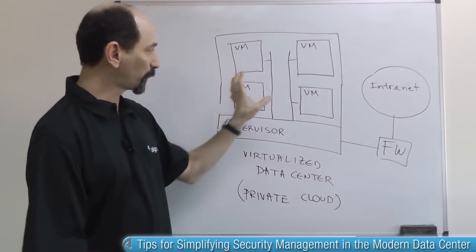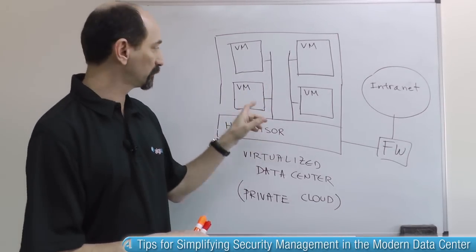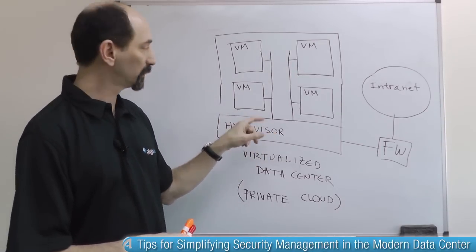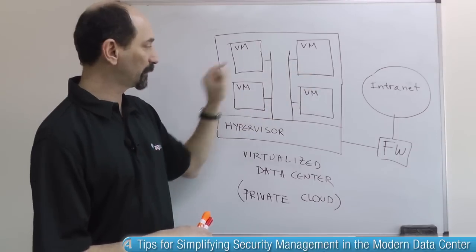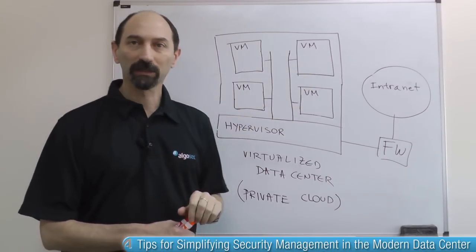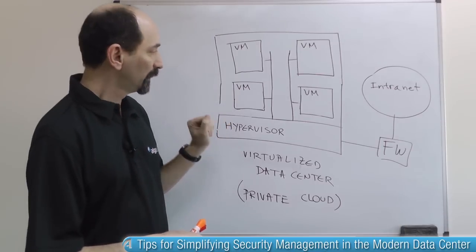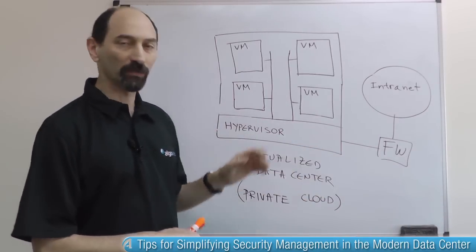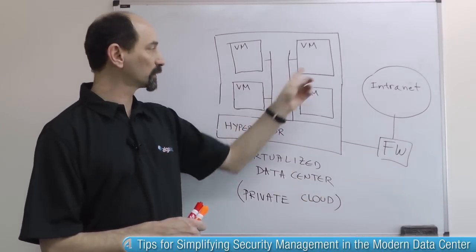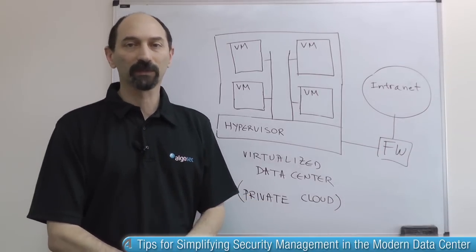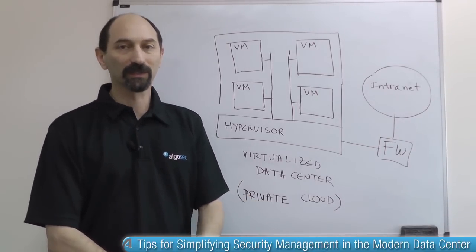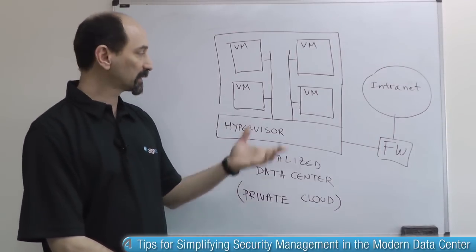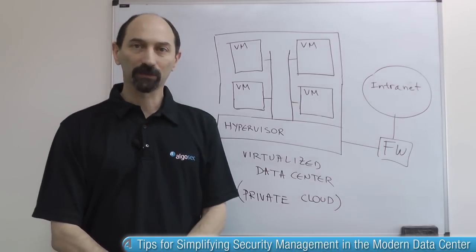What is the property of such a design? There is no filtering going on inside the virtualized private cloud. Traffic between the different VMs is completely unfiltered and all the filtering is on the outside. This is fine if your workloads on these different VMs share the same security requirements and all access data with the same sensitivity level. But what happens if you want to run different workloads inside the one private cloud data center?